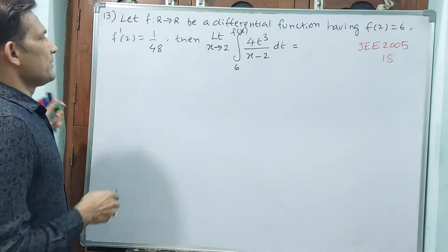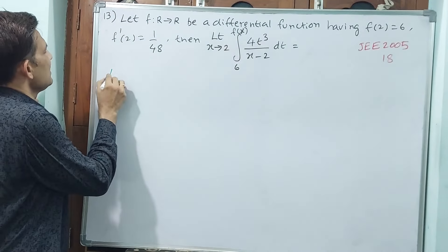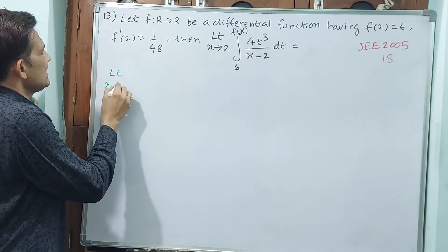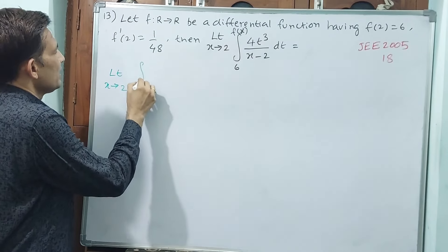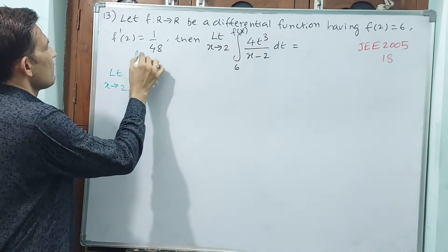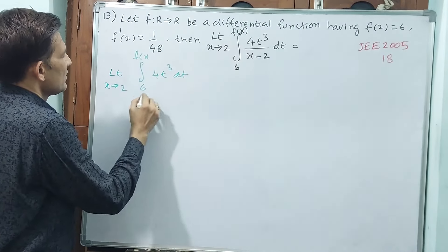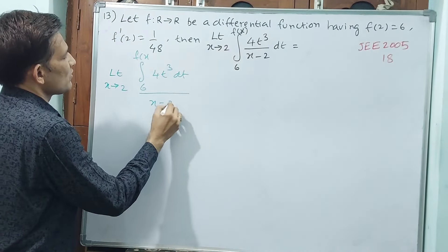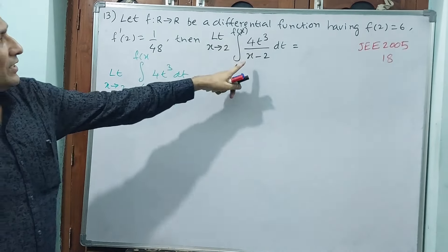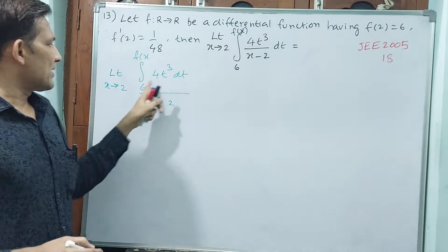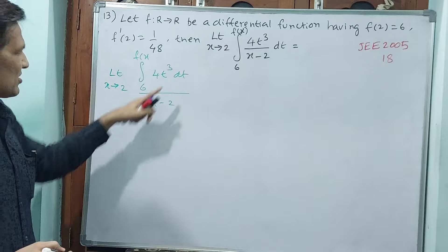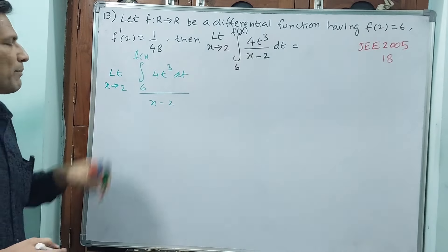Little bit carefully how to do this. See how I am dealing this. Limit x tends to 2, integral 6 to f of x, 4t cube dt divided by x minus 2. Have you noticed it? Now entire integral I have set to numerator. First let us finish this, then we will come back.